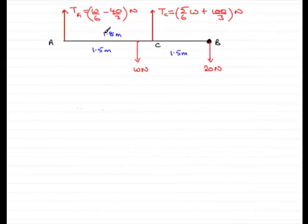Now I've updated the tension acting at A with the answer we just got from part B. It's now W over 6 minus 40 thirds Newtons. And let's just write down what we're given.